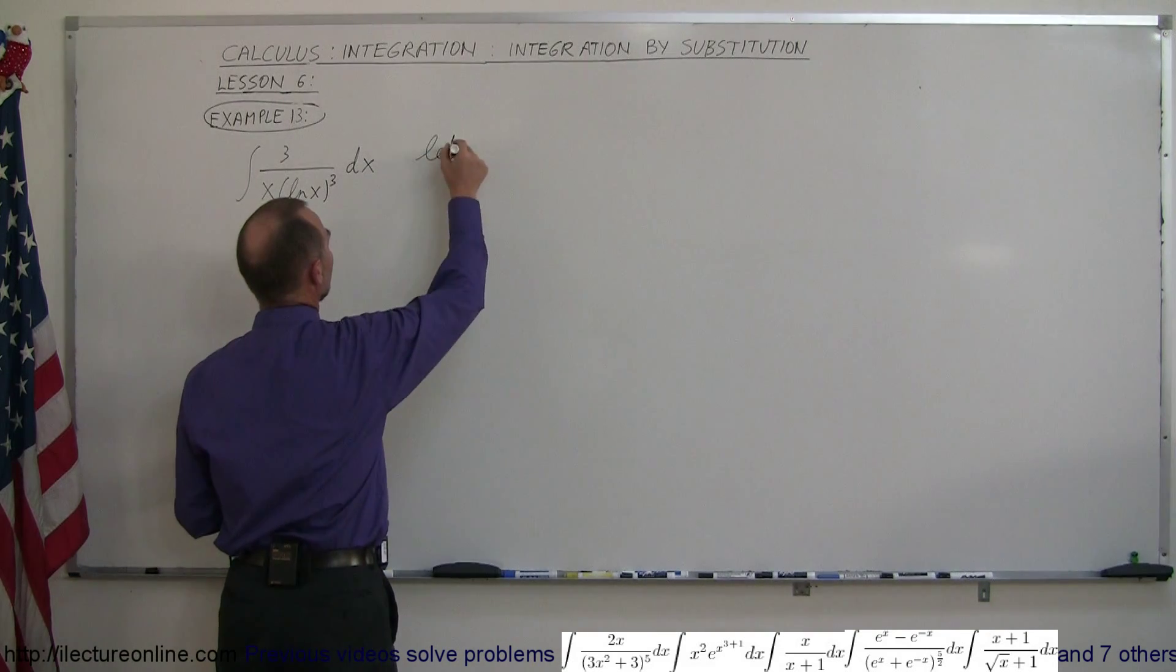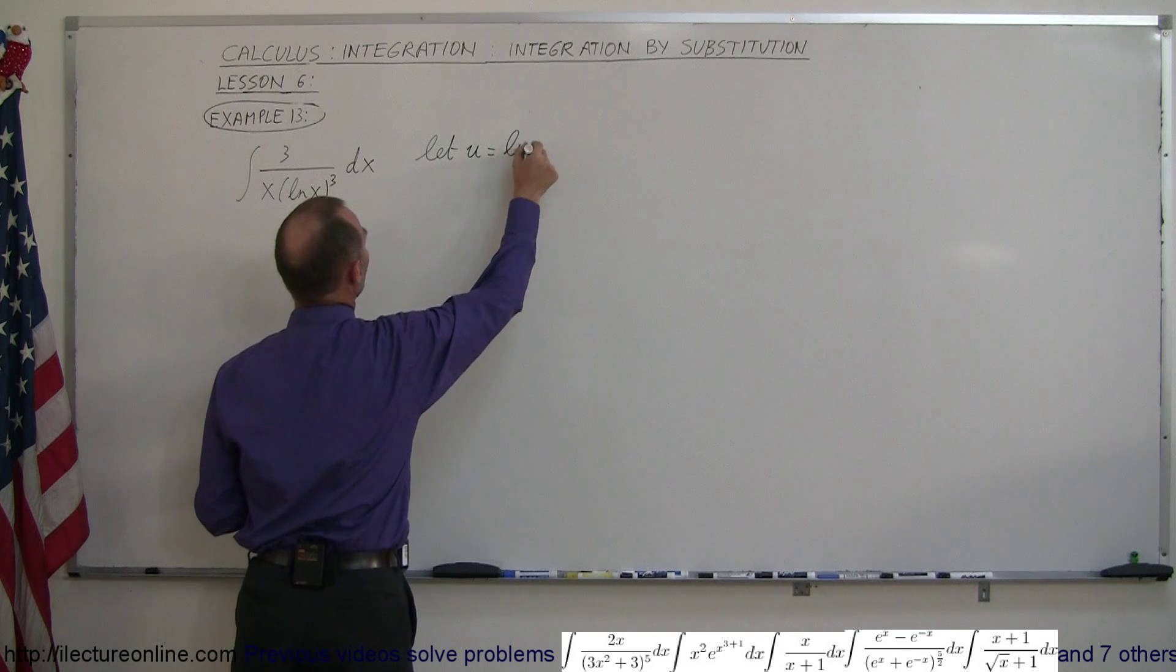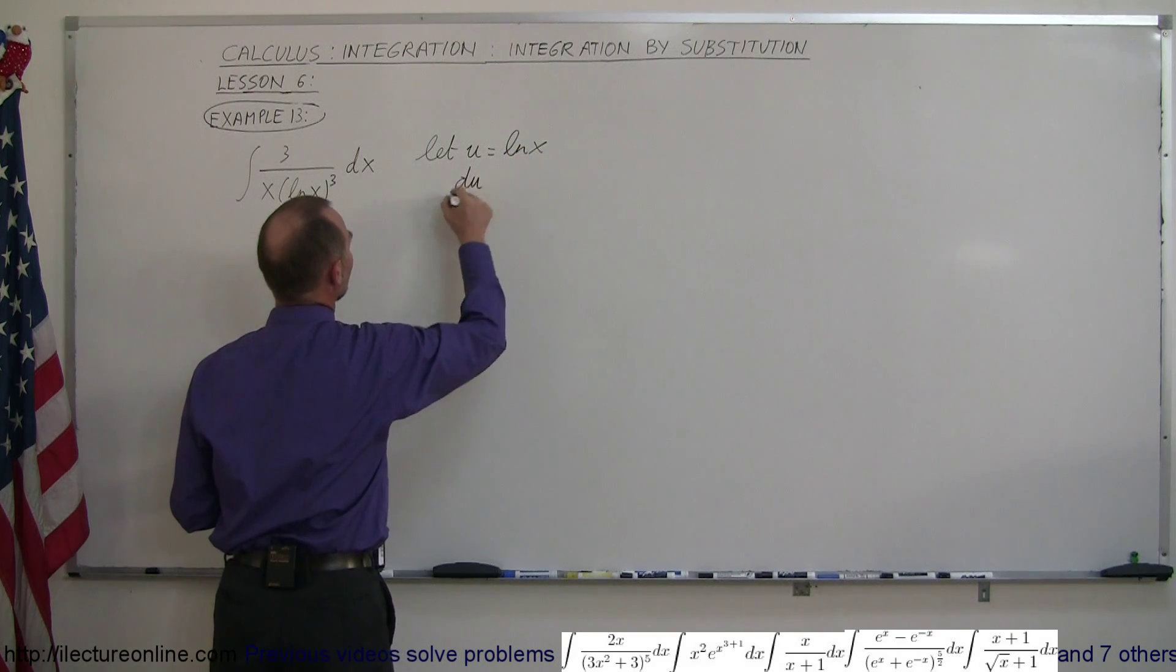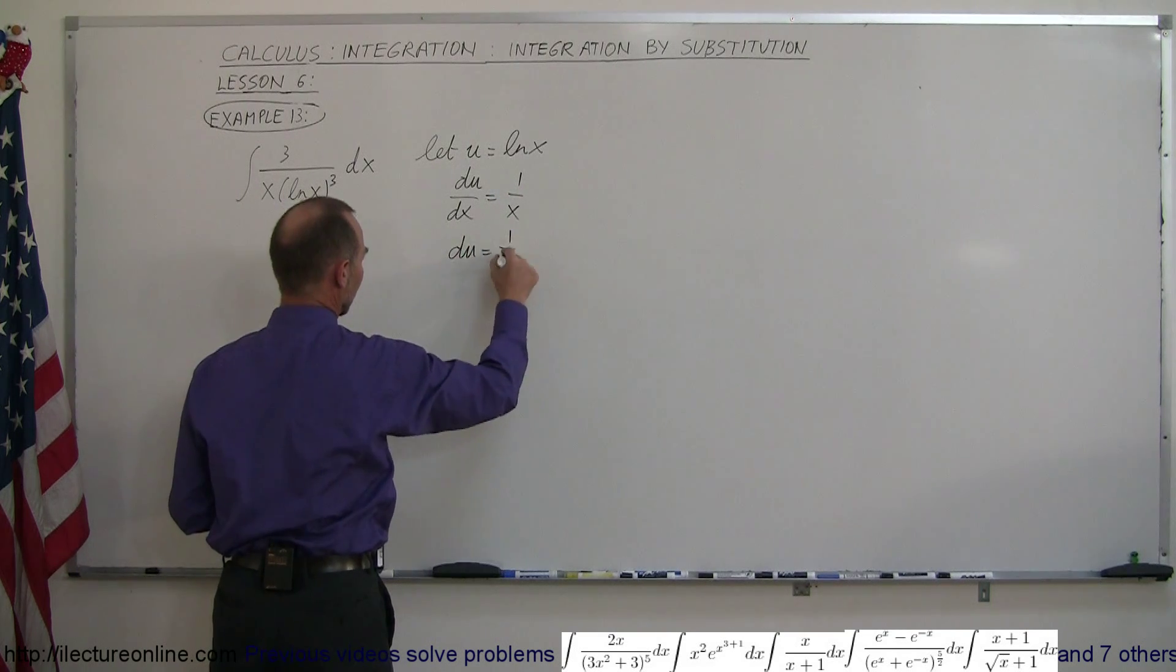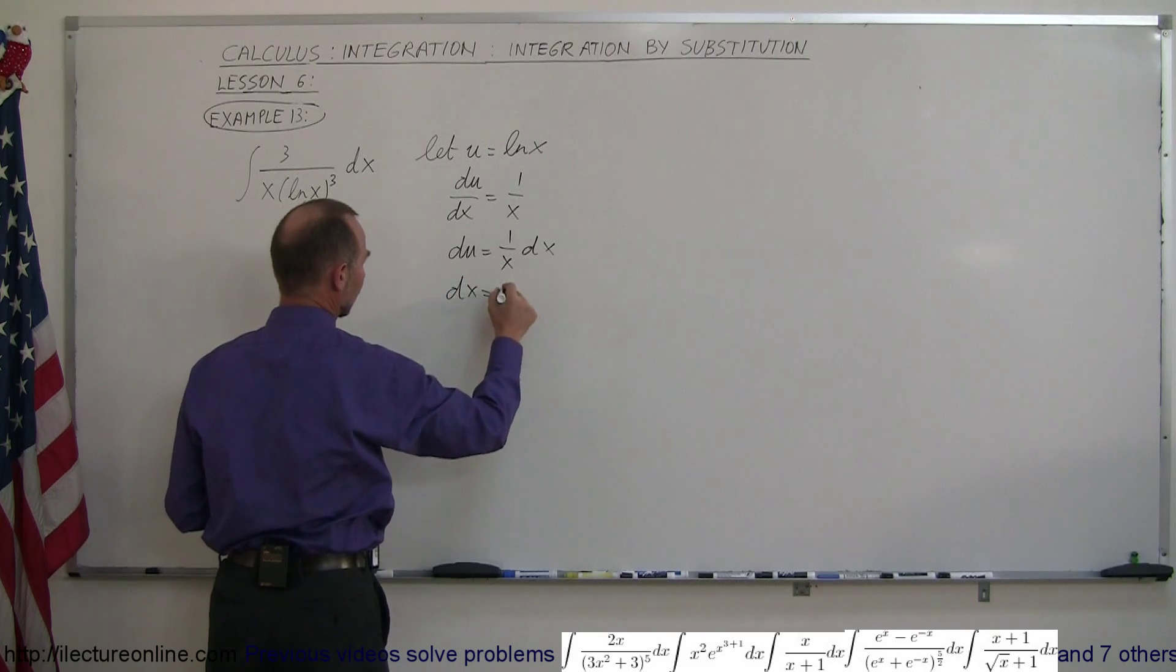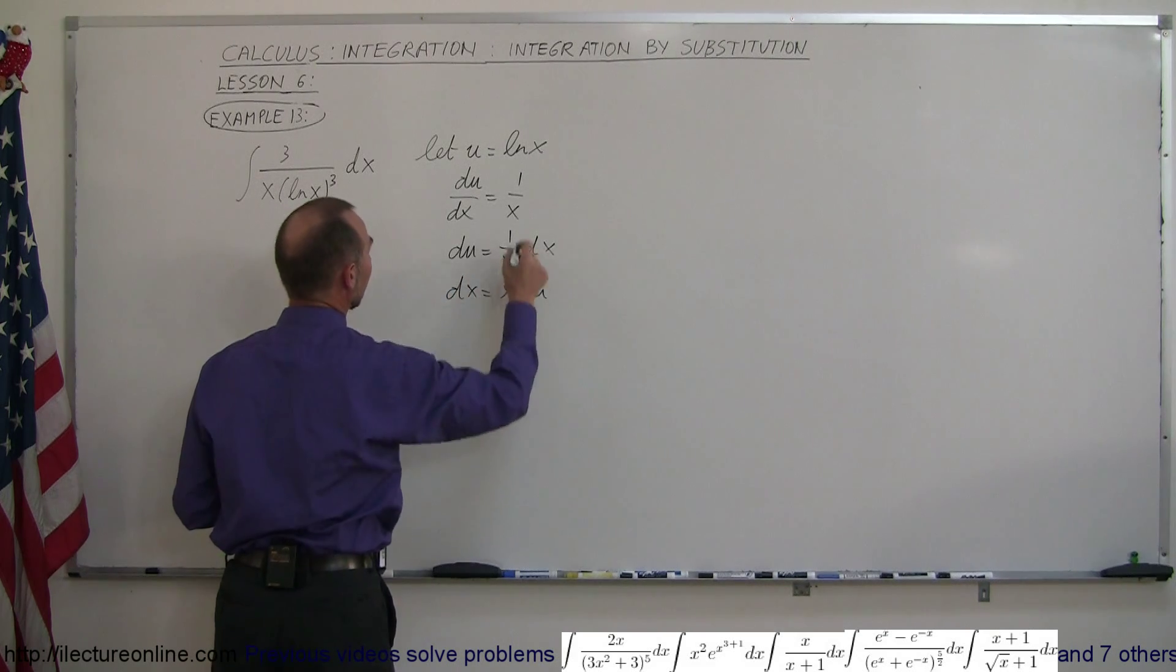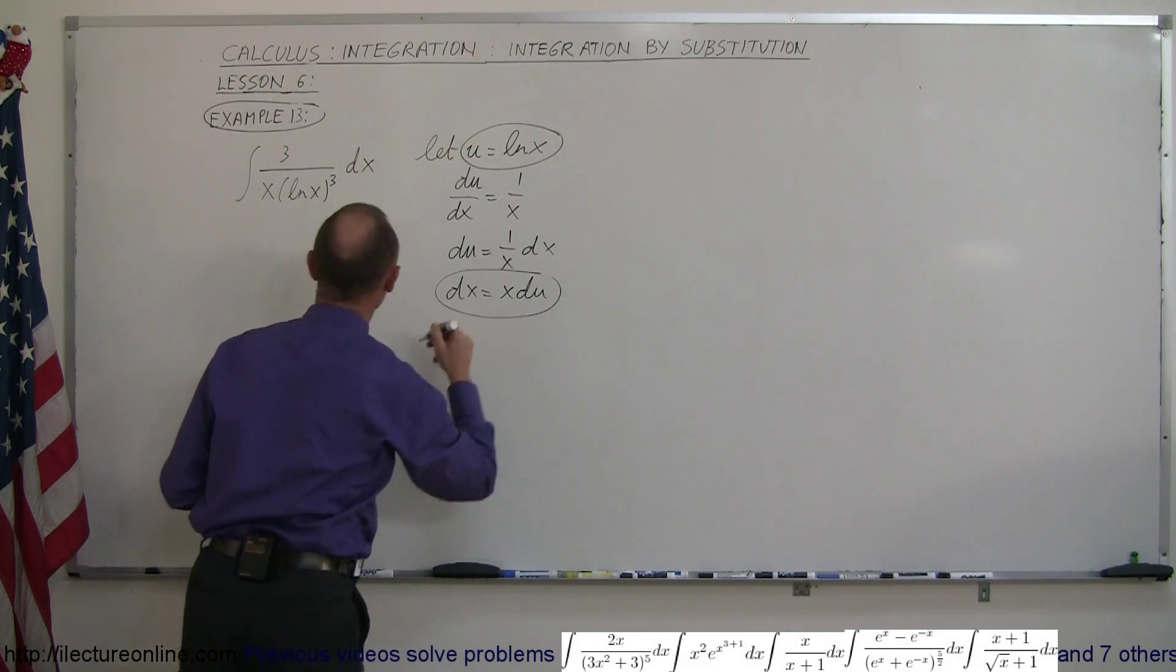So let u equal the natural log of x, which means du dx is equal to 1 over x. Du is therefore equal to 1 over x dx by moving the dx over, or dx is equal to x times du. And let's substitute this and this back in the integral.